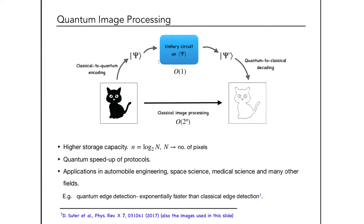For example, this picture illustrates quantum edge detection on a binary image. After completing the edge detection protocol, you can see the edges between the black and white pixels. If performed classically, the time complexity is 2 to the power n, where n is the number of qubits used to encode the image. Quantum mechanically, the complexity is just one — you apply a single unitary operator — an example of the exponential speedup of quantum algorithms over classical ones.